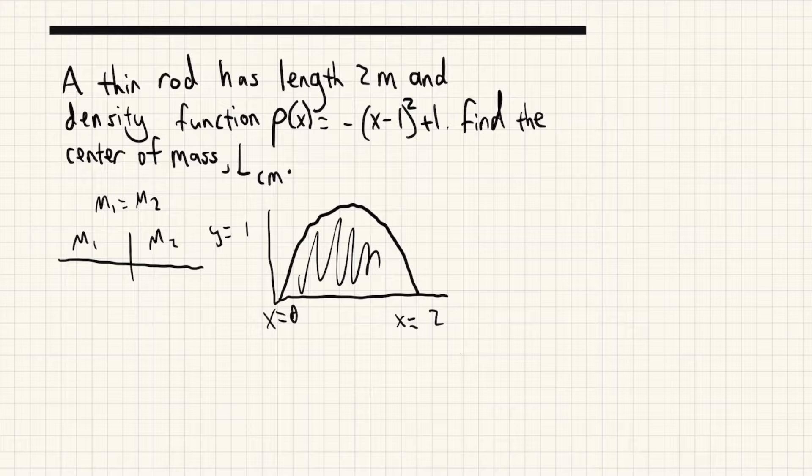Now, since it's a parabola, it has symmetry. So we can say that the center of mass, the point at which the total mass on both sides is equal, it's going to be just in the middle. But how can we show that for any function mathematically? Because not all functions are going to have a simple graph like this.